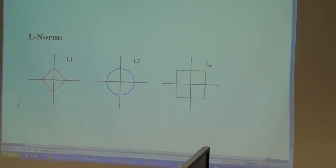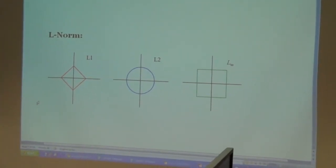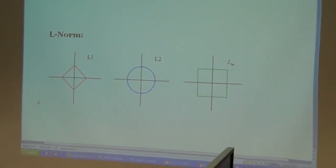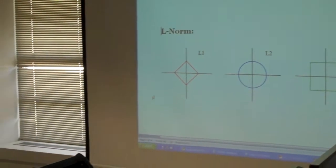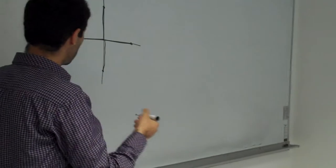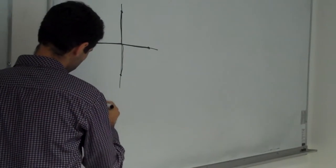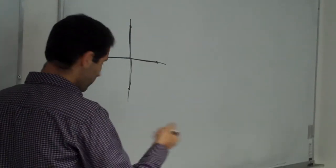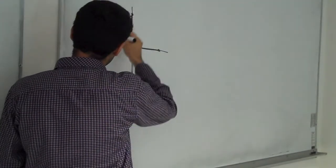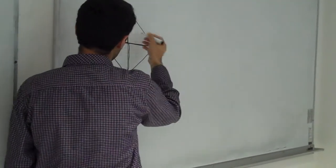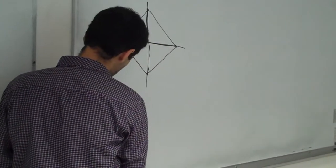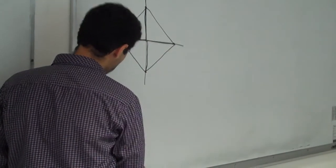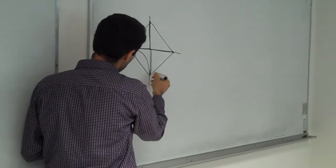In compressive sensing, the best known is L0. The L0 shape is maybe something like this. And if P goes up from 0 to 1, it's L1. For example, if P is between 0 and 1, it's a shape like this.